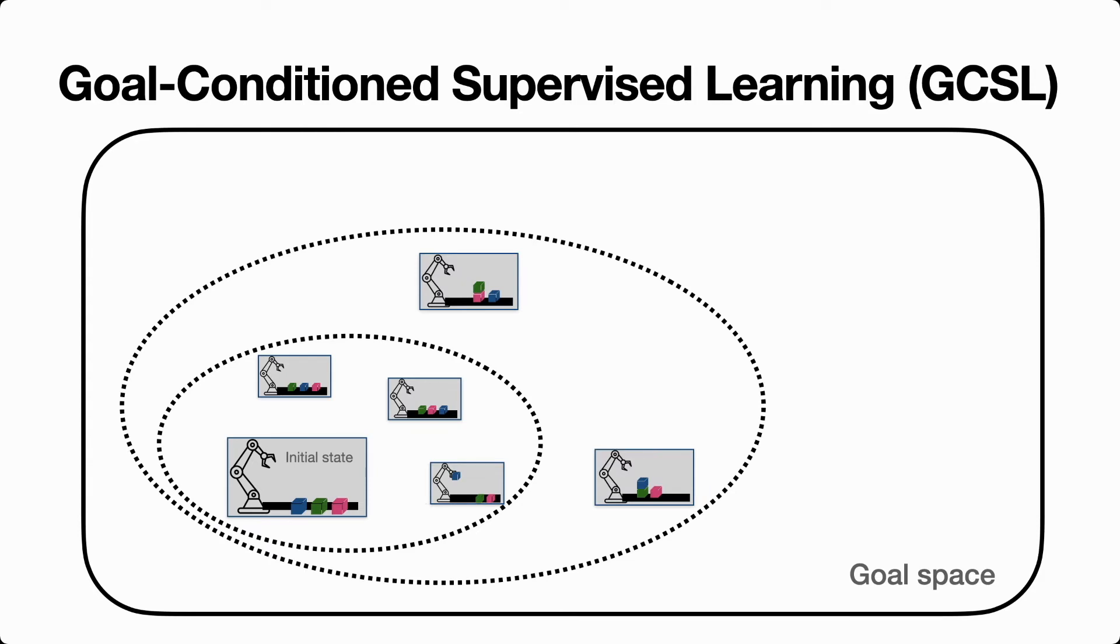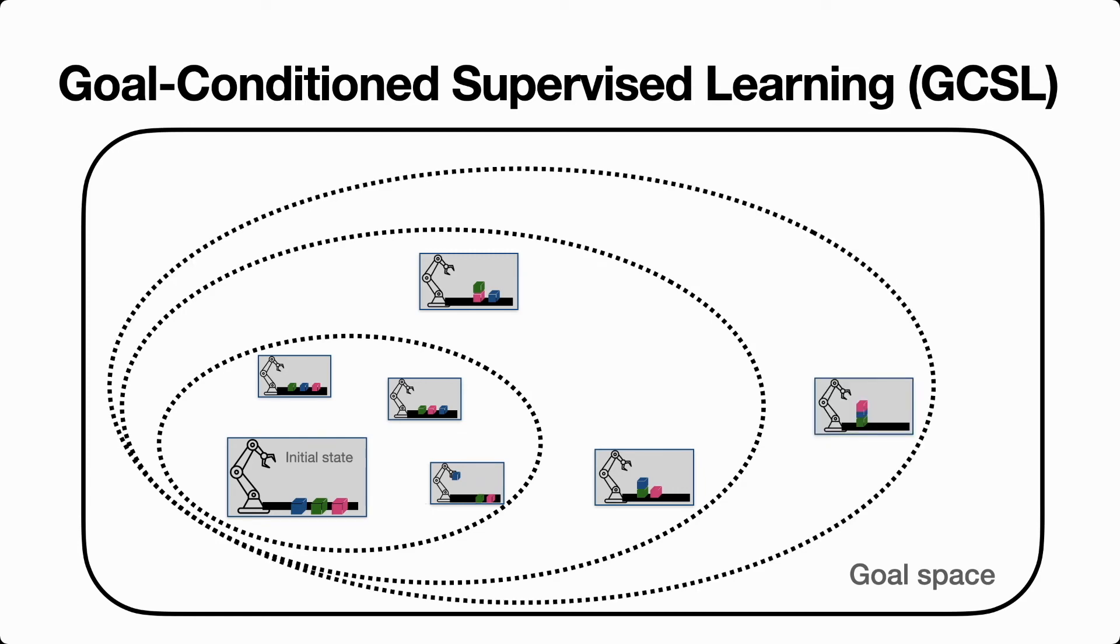By repeating this relabeling and imitation step, the policy will get better at reaching a wider and wider range of goals, and as a consequence, start to witness even more goals and new ways to reach them. If this agent never iteratively collected data, then it would only ever learn a policy to reach the most easy to achieve goals.